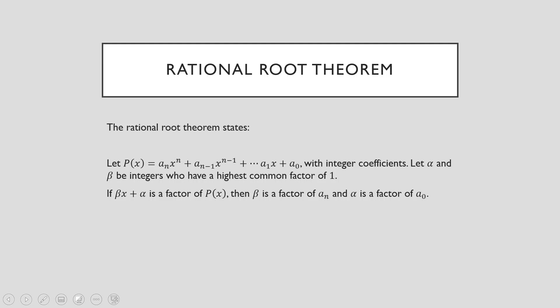So the rational root theorem — it's pretty verbose, there's a lot of technical language in it. But basically it says: if you're going to find a factor of a polynomial, and the factor has this form, then beta is a factor of the leading term coefficient. And just like before, alpha is a factor of your constant term. So the way you determine alpha doesn't change, but now we have to start introducing values of beta, which are factors of your leading term coefficient.